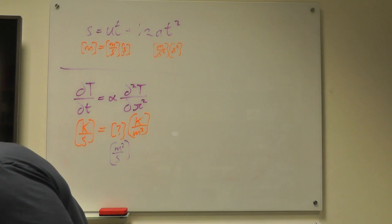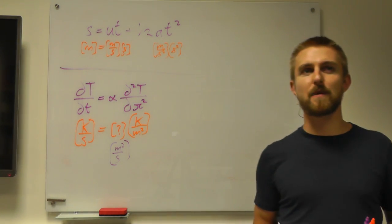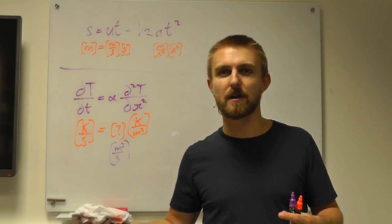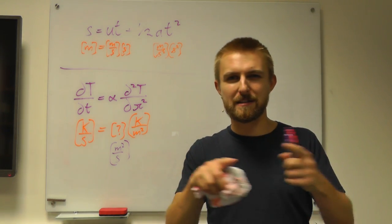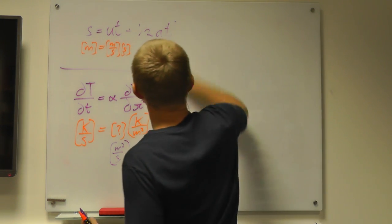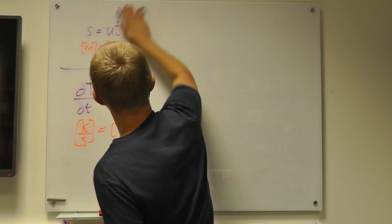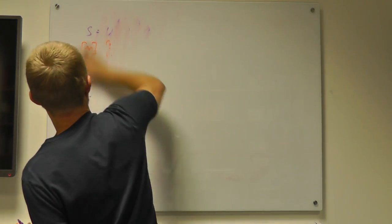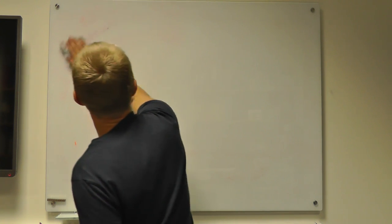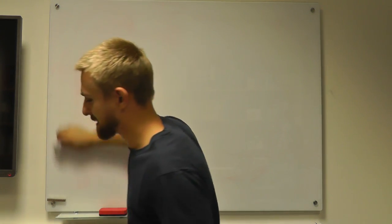The last example we're going to look at is the case where you've got an equation and you know the units of all the terms, but they're not really obviously the same. In this case, obviously meters is the same as meters. What if you've got something a bit different? So the most famous example of this is probably Einstein's famous equation relating energy to mass and speed.